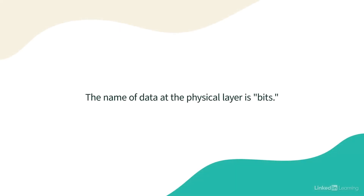Let's take a look at these layers one at a time, beginning with layer one, the physical layer. It's here at the physical layer where we have things like network cabling or radio waves being sent from wireless access points. And the name we give data down here at the physical layer is BITS.